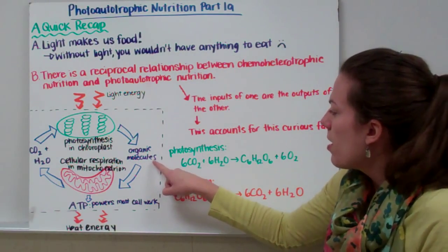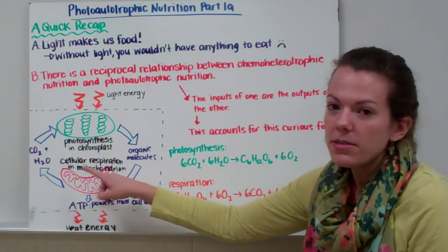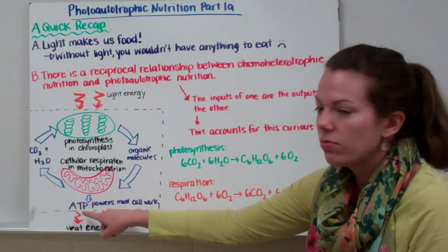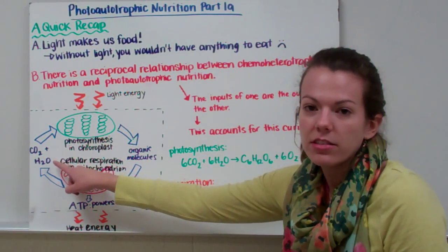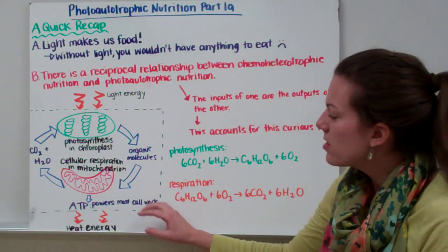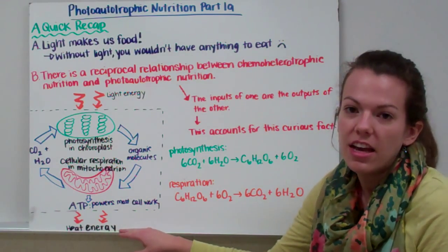Then our mitochondria, in turn, takes those organic molecules, it breaks them down through cell respiration, and it turns them into energy, or ATP, and carbon dioxide and water. That ATP powers most of the cells' work, but some of that energy is not able to be captured, and it is released as heat energy.